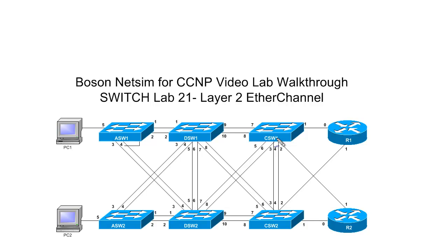Notice that every device has redundant connections to every other device. This is good in that we have redundancy in case any connection is broken — there's always going to be a backup link. The problem with redundancy at Layer 2 is that it will allow a switching loop to form, and since there's no time-to-live mechanism in a Layer 2 Ethernet frame, we can get into a situation where frames loop endlessly throughout the topology, which can cause all kinds of problems. The spanning tree protocol will solve that problem for us, at the cost of half of our available bandwidth.